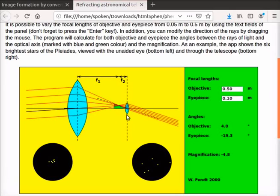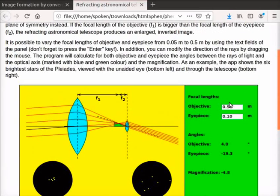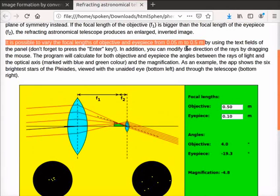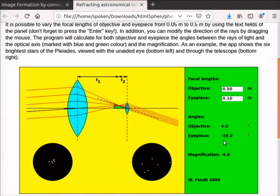The image formed is enlarged and inverted. The magnified image of six brightest stars of the Pleiades is seen in the black circle. In the green panel, focal lengths of objective and eyepiece can be edited. Here we can vary the focal lengths of objective and eyepiece from 0.05 m to 0.5 m. As per the changes in the focal lengths, app calculates angles and magnification.